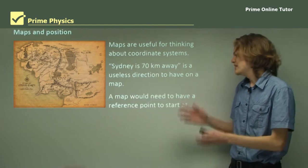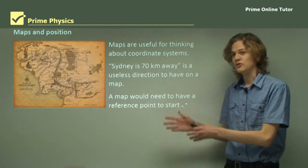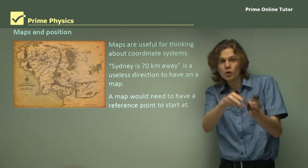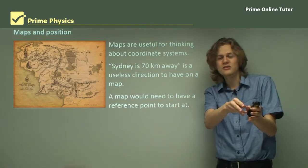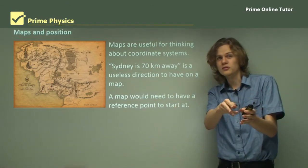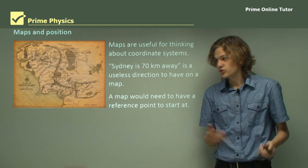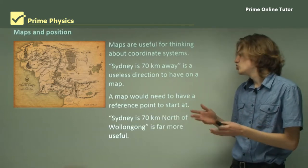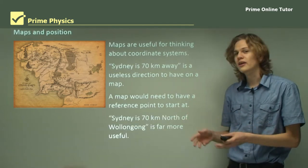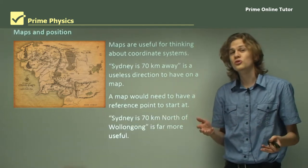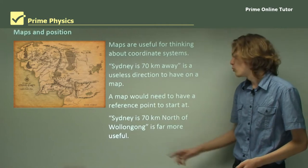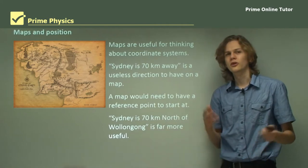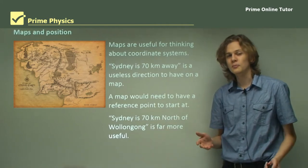What we need is a reference point — somewhere to start at — so we can say 'from here, Sydney is 70 kilometers.' An instruction like 'Sydney is 70 kilometers north of Wollongong' is much more useful because we have a point of reference, Wollongong, to base our position on.